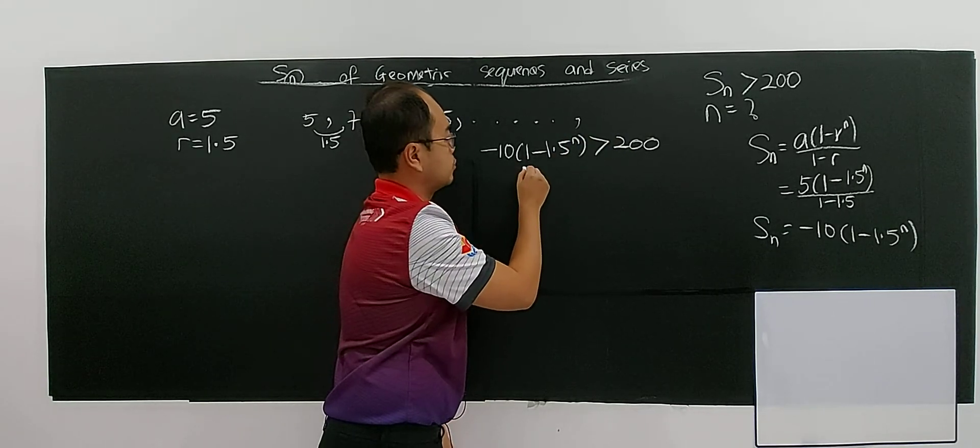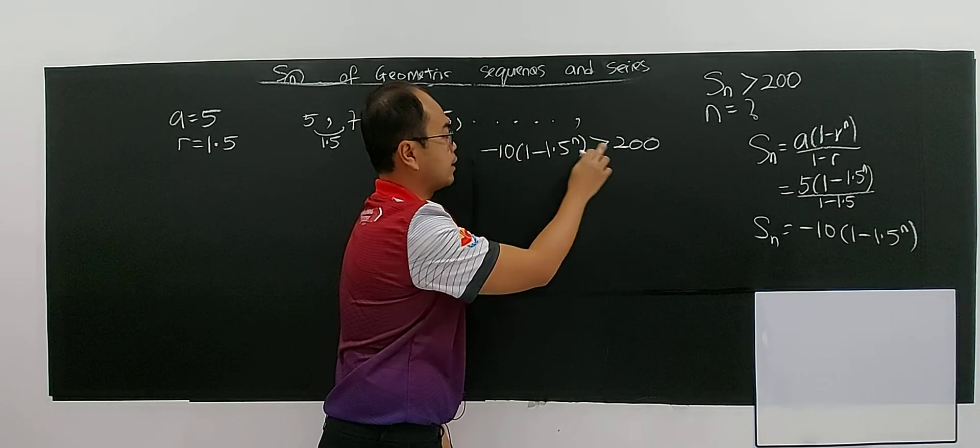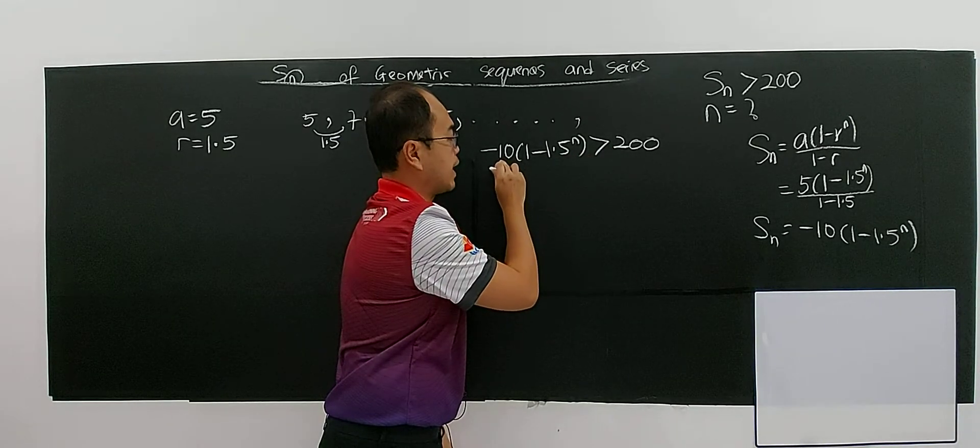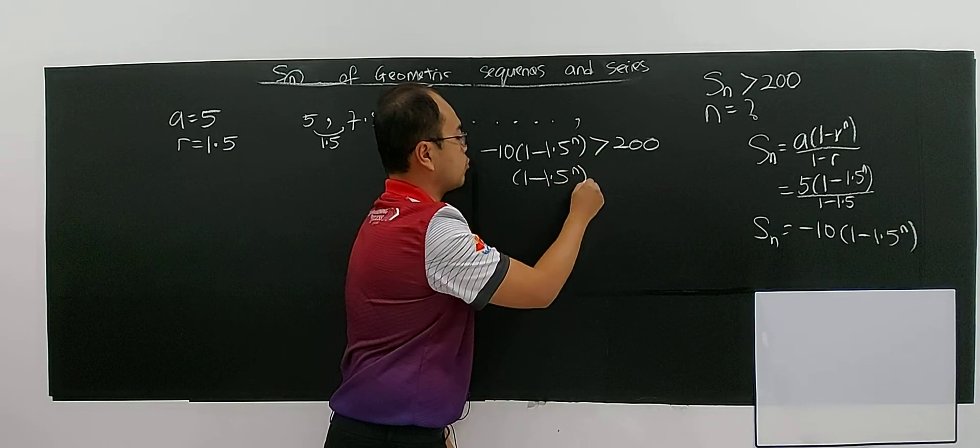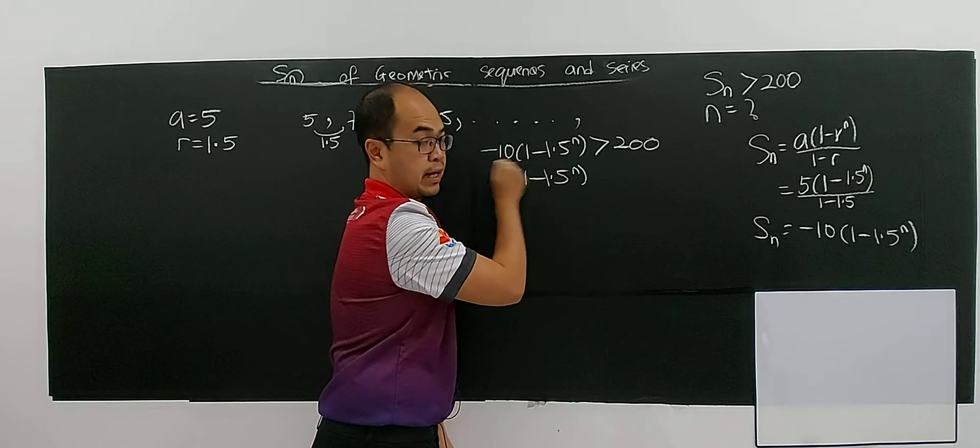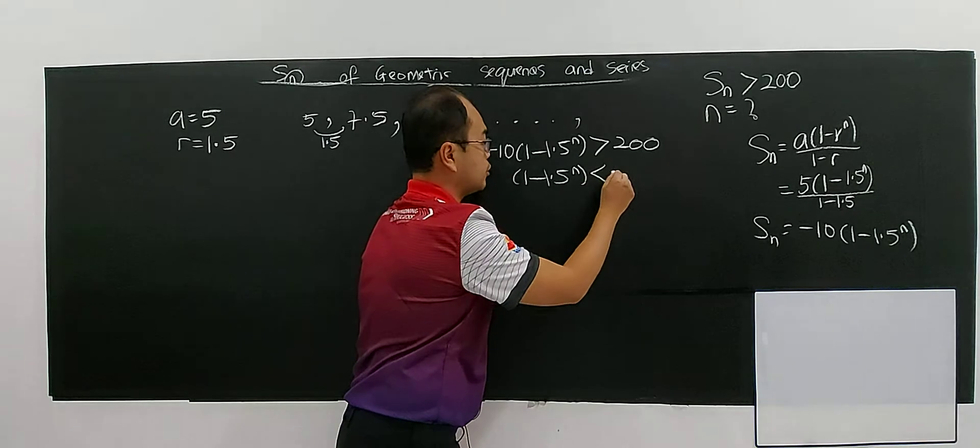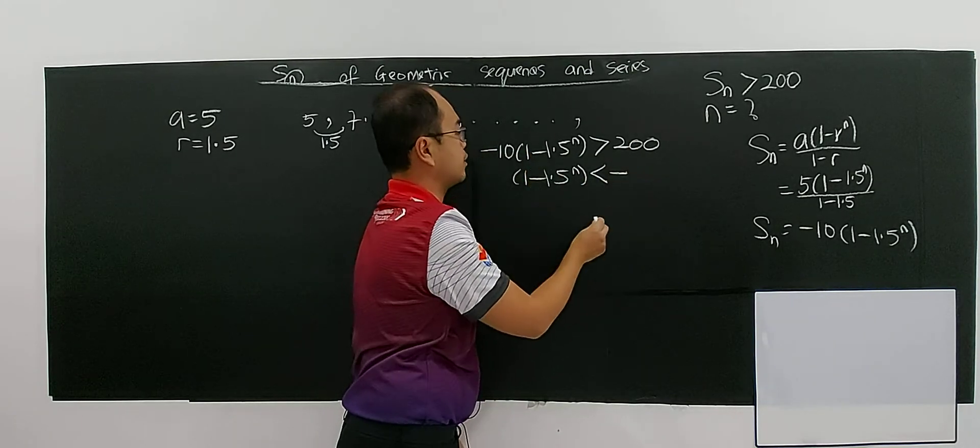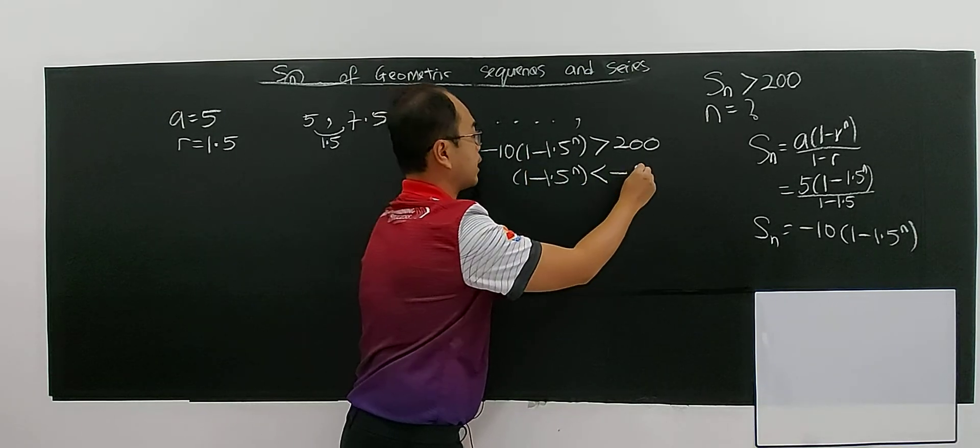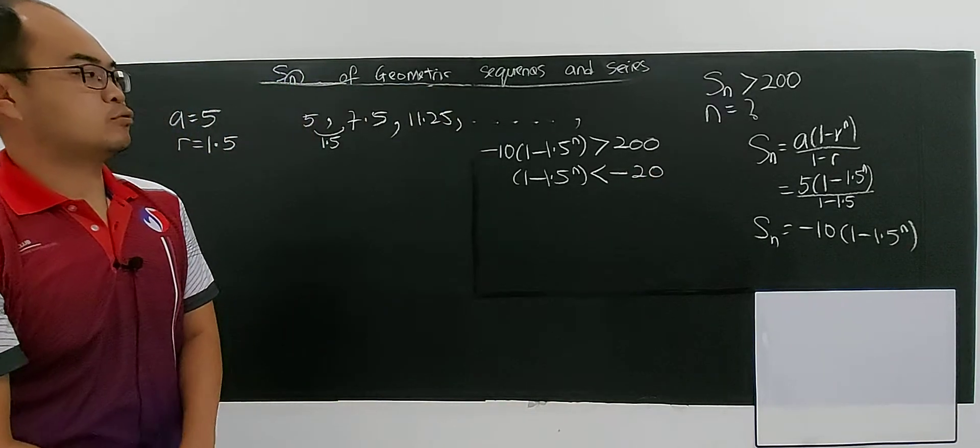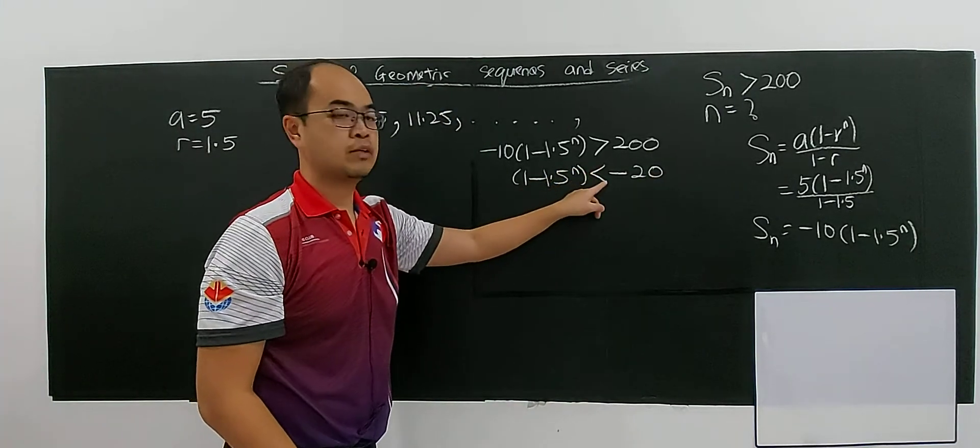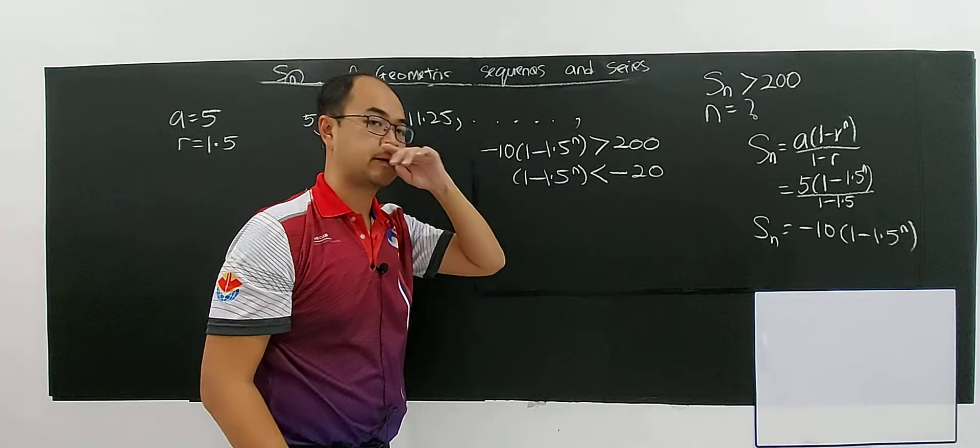So we're going to find. First you have negative 10, you want to divide by negative 10 both sides. Be careful about when you're doing inequality. When you divide by negative 10, the sign you have to change. 200 divided by negative 10 will be negative 20. But don't forget to reverse the sign because you divide both sides by negative 10, property of inequality.